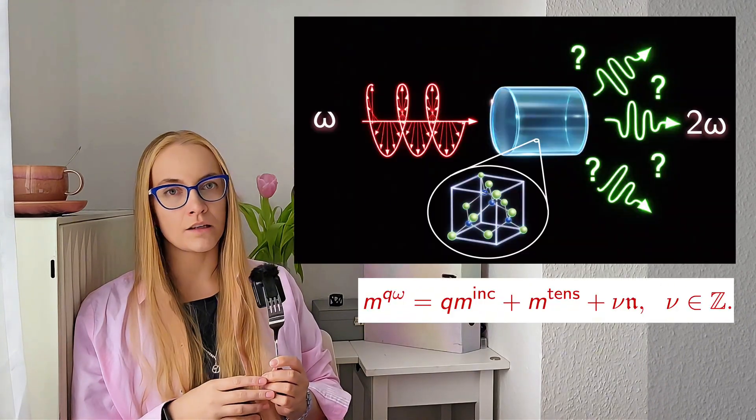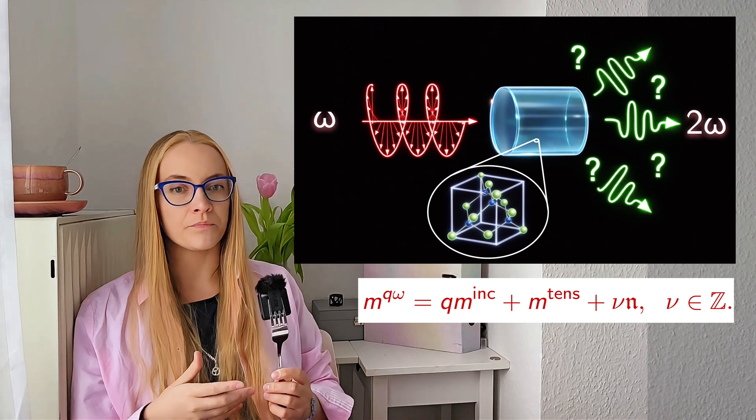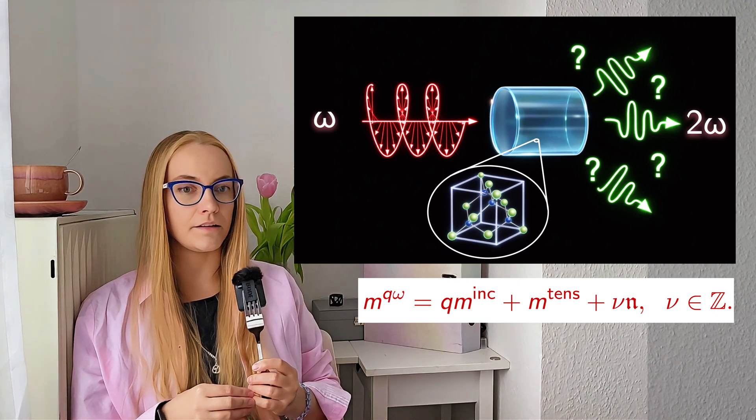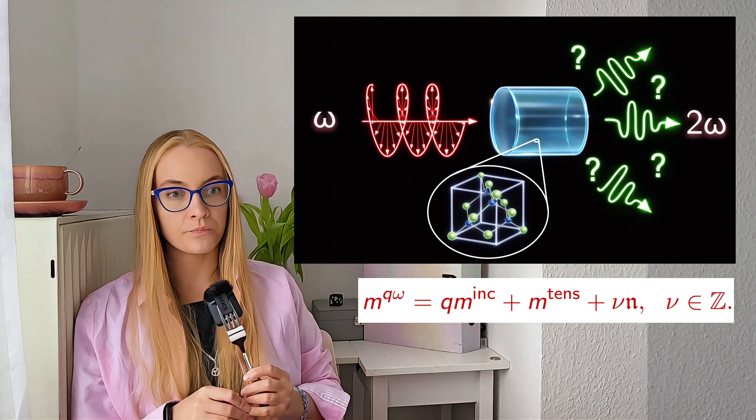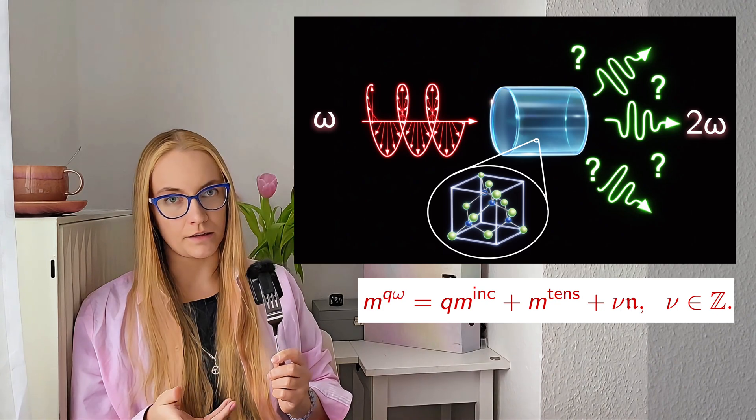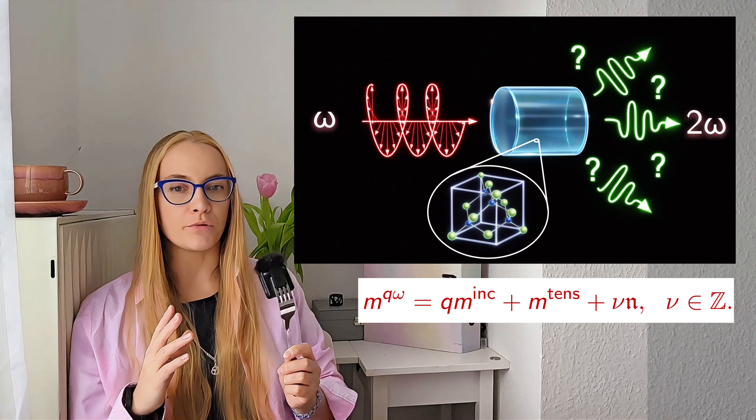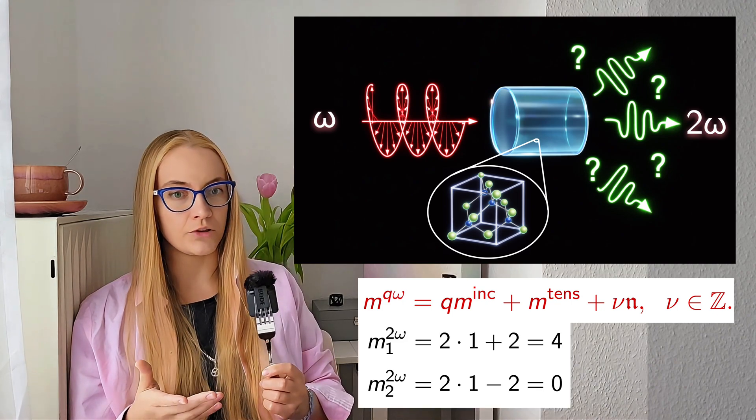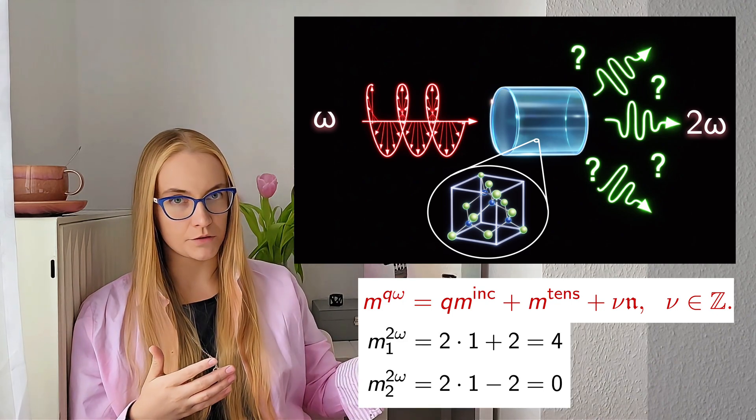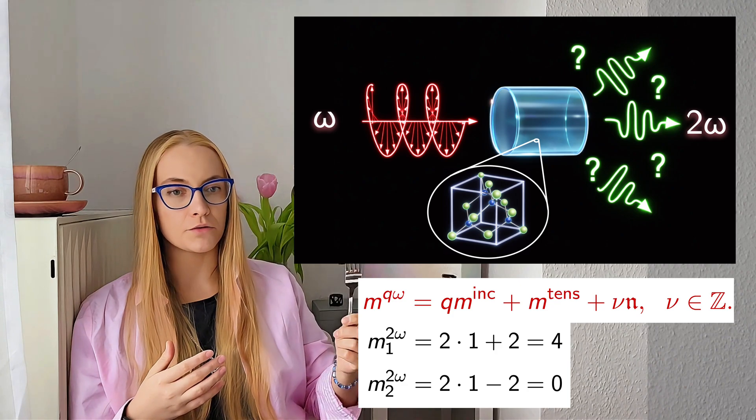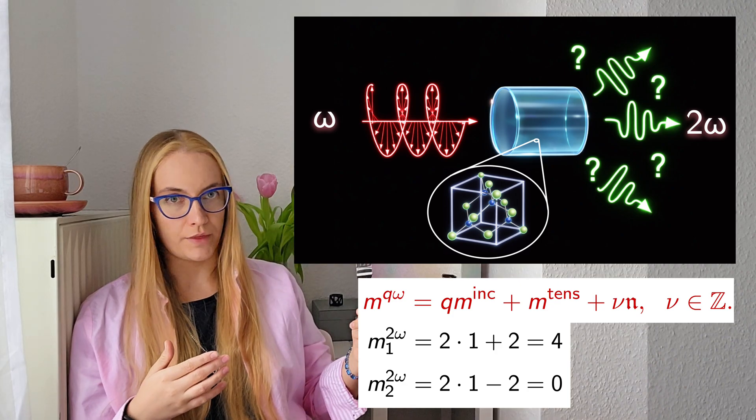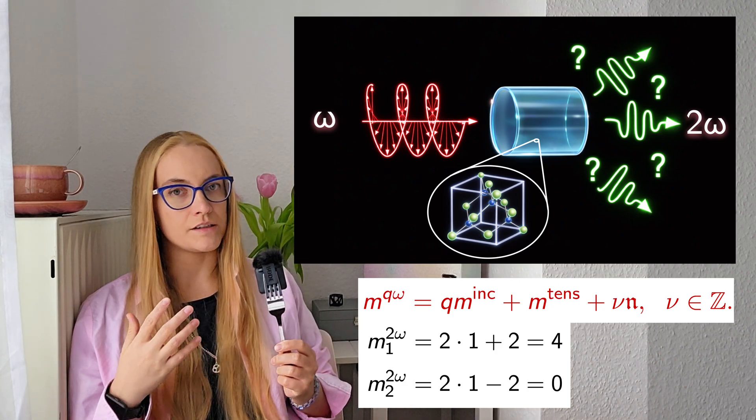Now let us consider an example. Take gallium arsenide and an incident circularly polarized wave, and consider a cylindrical nanostructure to better see the influence of the tensor. Then the possible outputs for the second harmonic are either 1 plus 1 plus 2 or 1 plus 1 minus 2 for the two terms of the nonlinear tensor, giving 0 or 4.